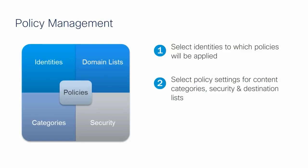For content, Umbrella has more than 60 web filtering categories that customers can use to restrict access — for example, customers can block adult-related websites. For security policies, malware is blocked by default, but customers can determine if they want to block high-risk sites or enable our intelligence proxy or IP enforcement. For destination or domain lists, customers can add specific domains to block and allow. Customers can set policies for different users, and they can even configure different policies for when users are on or off the corporate network.